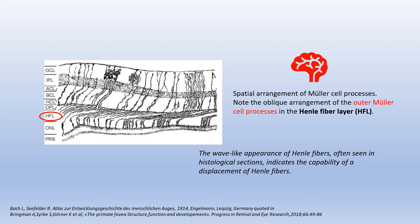Henle fibers play a role in accommodation and fixation by causing flattening and deepening of the foveal pit. Müller cells of the fovea walls are connected by horizontal side processes within the inner part of the outer plexiform layer, forming a horizontal layering structure. Horizontal contraction of Müller cell processes within the outer plexiform layer will produce traction on the Henle fibers. Centrifugal displacement of Henle fibers will alter the slope of the outer limiting membrane in the foveola and the shape of the fovea externa. Perhaps the wave-like appearance of Henle fibers, often seen in histological sections, indicates the capability of displacement of Henle fibers.